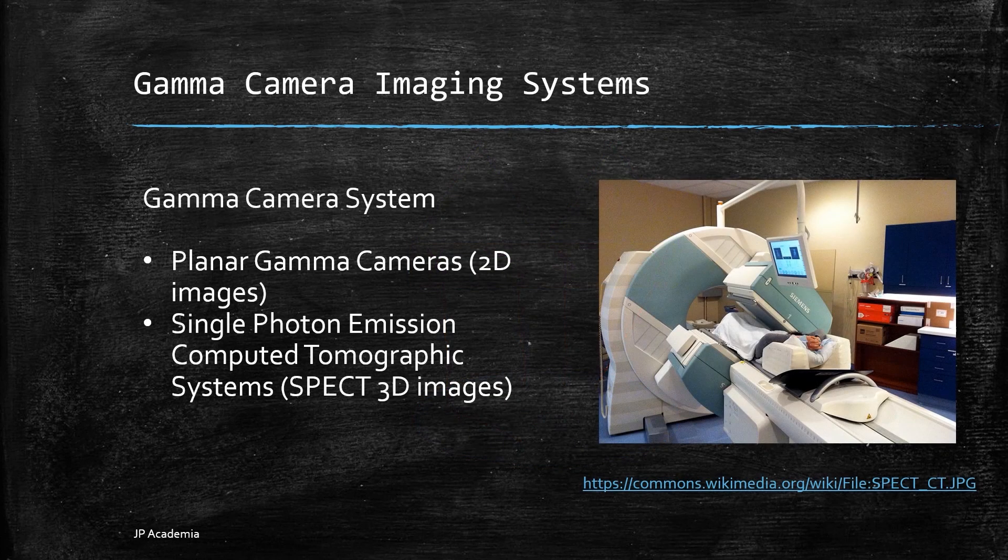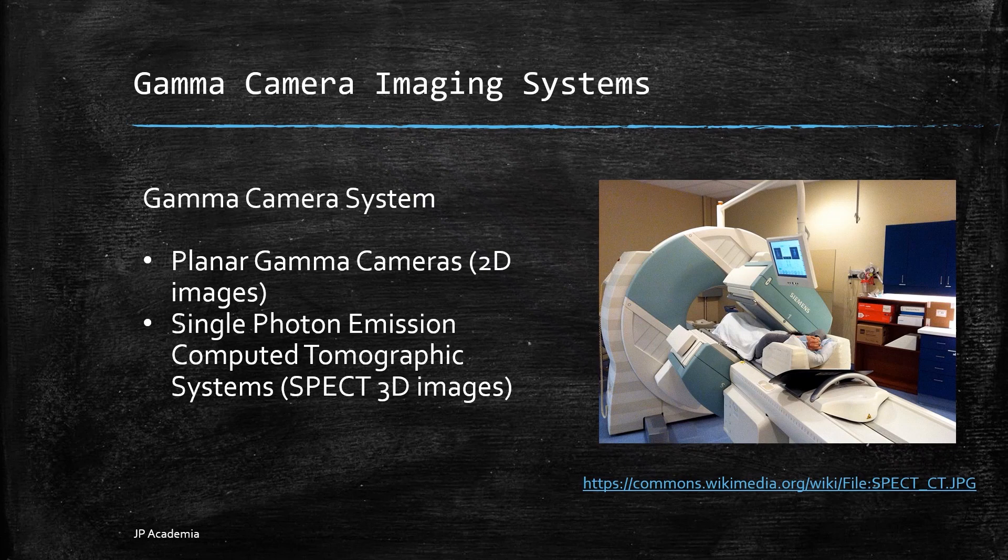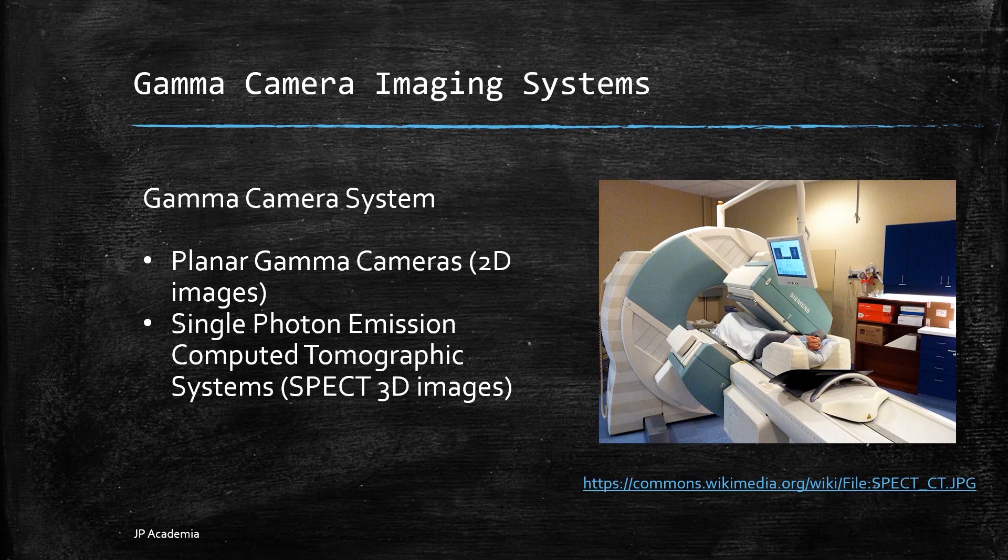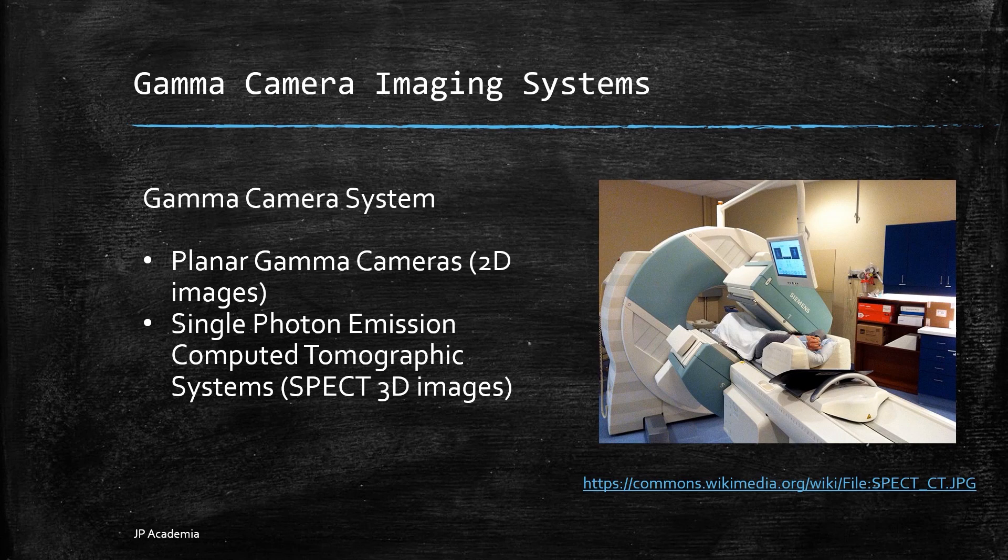Gamma camera systems are utilized first in planar gamma cameras to produce 2D images. Second, we have the single photon emission computed tomographic systems or SPECT to produce 3D images. And that's it for this lecture.